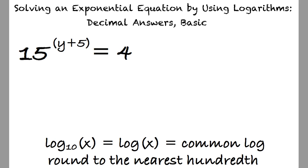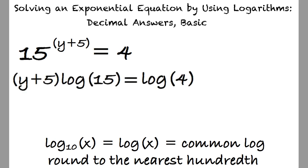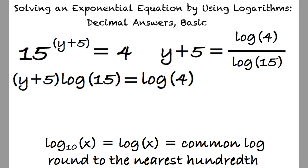First, we can take the common logarithm of both sides of the equation, resulting in (y + 5) times the log of 15 equals the log of 4. Next, we begin isolating the variable by dividing both sides by log of 15, yielding y + 5 equals log of 4 divided by log of 15.